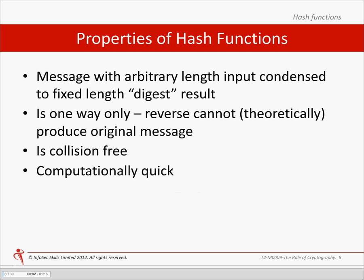The basic requirements for a cryptographic hash function are as follows. Input can be of any length. The output has a fixed length. A hash function is said to be one way if it is hard to invert — meaning that given the hash value, it is computationally infeasible to calculate the original input.